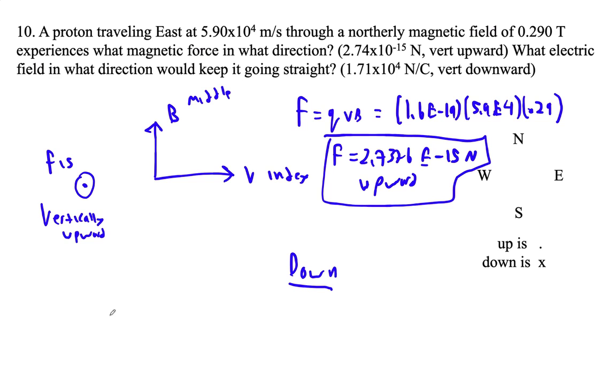If we say that the magnetic force, which is QVB, equals the electric force, that's just EQ. Notice that the Q cancels. And so E is just literally velocity times the magnetic field, which is just kind of cool.